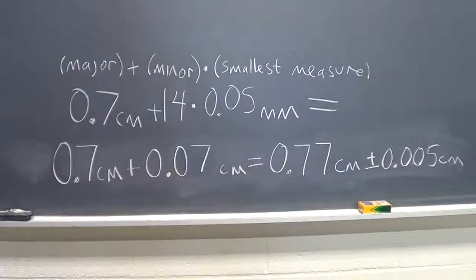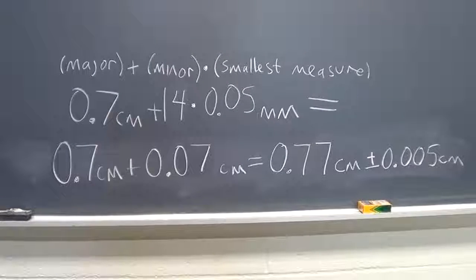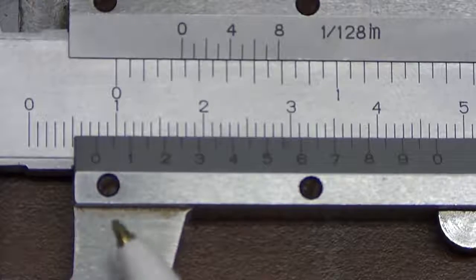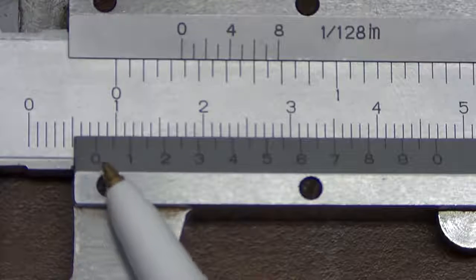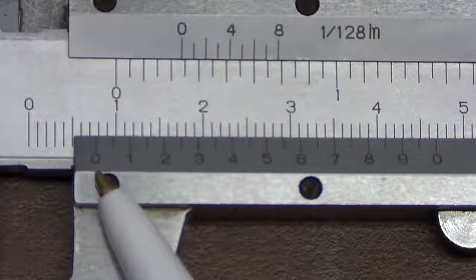As a check, this makes sense because the value should be between 0.7 centimeters and 0.8 centimeters. If we look back at our original measurement, we see that our zero mark on the minor scale is close to the 0.8, so 0.77 centimeters makes sense.